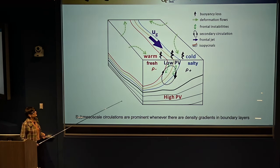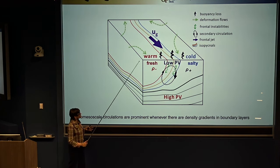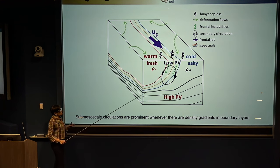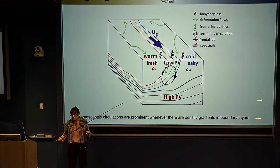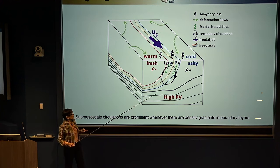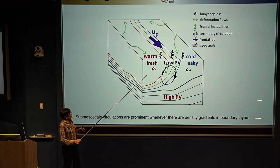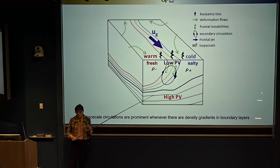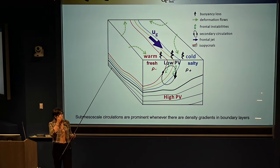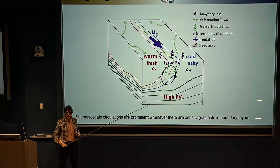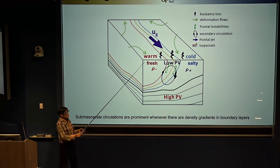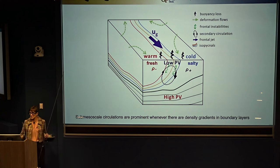Sub-mesoscale processes are important whenever you have density gradients — cold and warmer water coming together, or saltier and fresher water, or both. They are especially relevant in a boundary layer: close to the surface of the ocean or near the bottom near the bathymetry. And it doesn't happen just in the ocean, but the ocean is definitely one place where you see this very clearly.